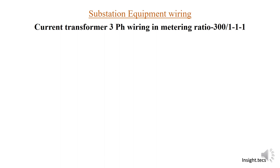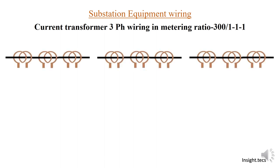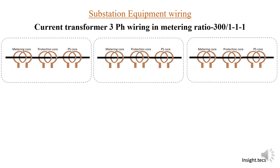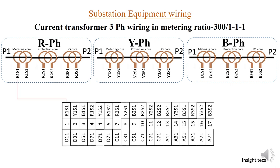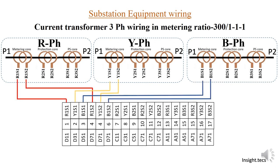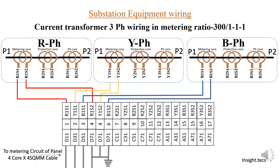Here there is a metering core. As we have seen in the previous videos, what is the metering core? So here there is a 3-phase metering core, and here there are 4 wires: D11, D31, D51, and D71, which go to the control room. Now we will see what the wiring is in the control room.